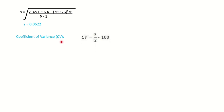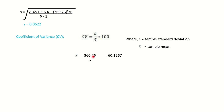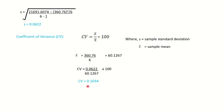Next is the coefficient of variance. Note down this formula: CV equals s divided by x-bar, multiplied by 100, where s is the sample standard deviation and x-bar is the sample mean. We already calculated the sum of x as 360.76 while computing standard deviation. Dividing by the number of samples (6) gives x-bar = 60.1267. Putting the values into the formula gives the coefficient of variance as 0.1034.